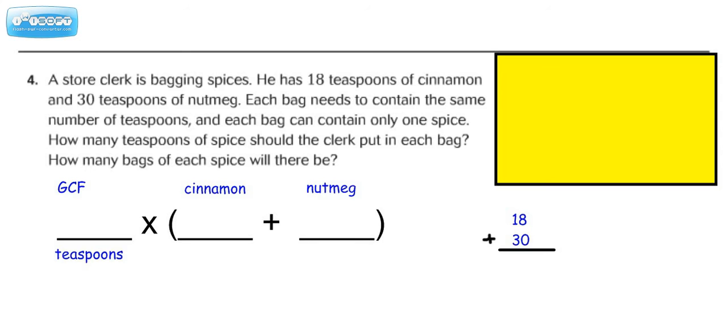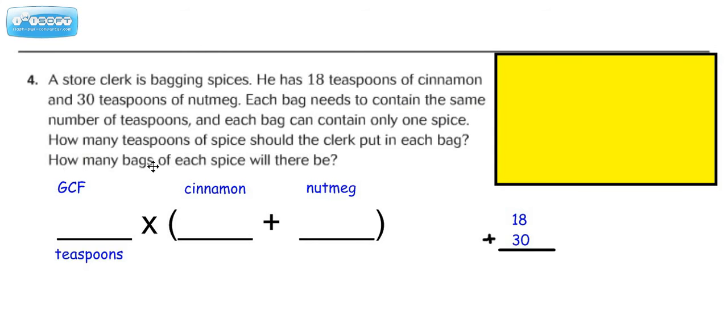A store clerk is bagging spices. He has 18 teaspoons of cinnamon and 30 teaspoons of nutmeg. Each bag needs to contain the same number of teaspoons and each bag can contain only one spice. How many teaspoons of spice should the clerk put in each bag? How many bags of each spice will there be?